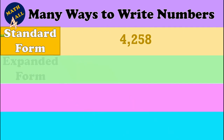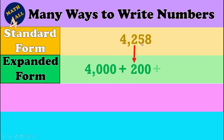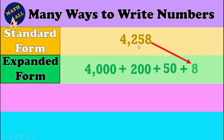Now let's go to the next way: the expanded form. When asked about the expanded form, you will write each digit alone with its value. Like this: four thousand two hundred fifty-eight is the same as four thousand plus two hundred plus fifty plus eight.